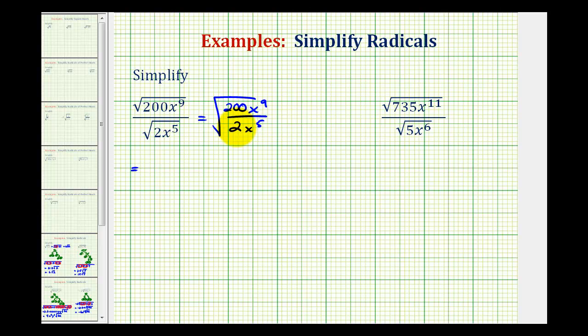So 200 divided by 2 is equal to 100, so we'd have the square root of 100, and then x to the ninth divided by x to the fifth would be x to the fourth.